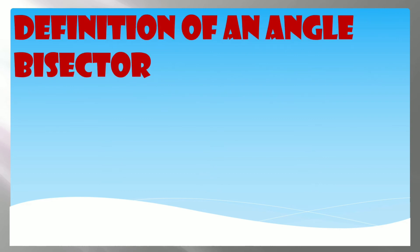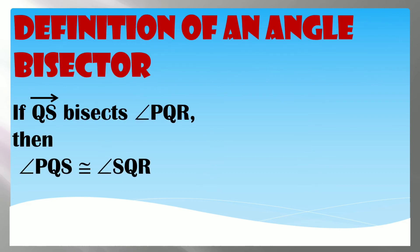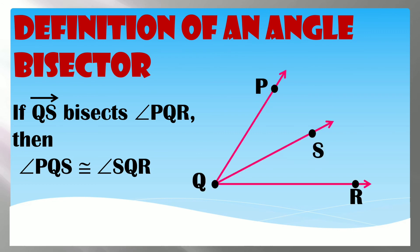The Definition of an Angle Bisector states: if ray QS bisects Angle PQR, then Angle PQS is congruent to Angle SQR. This means the angle bisector divides the angle into two congruent angles.